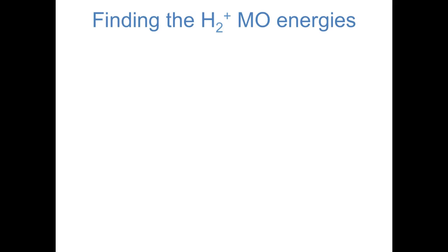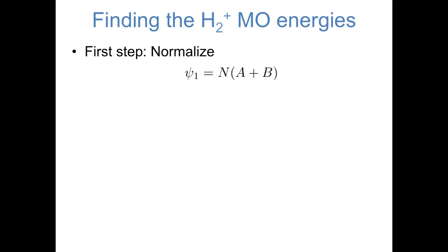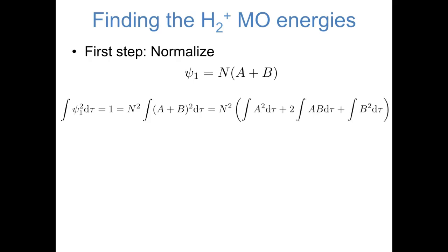Now that we have the approximate mathematical form of these wave functions, let's think about what their energies are. The first step is to normalize the wave functions. We're only going to do this for the orbital A plus B, but you could imagine doing something very similar for A minus B. So we know that our orbital, which we'll call psi 1, has this form: a normalization constant times A plus B, where A and B are normalized hydrogen 1s orbitals on the atoms. Since this molecular orbital consists of real values, we know that the definition of what it means to be normalized is that the integral of this wave function squared over all space equals 1. We can then substitute in our expression for psi 1, bringing the constant N squared out front. We can multiply out the contents of the integral in the same way that we would multiply out a polynomial, and separate it into three integrals.